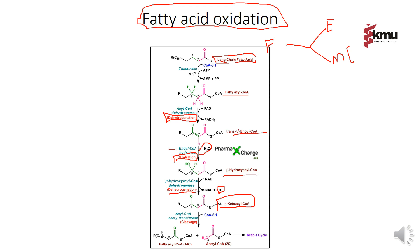In the fifth step, coenzyme A and thiolysis take place. The enzyme acyl-CoA acyl transferase is used, and beta-keto acyl-CoA is split into two groups: one is acyl-CoA consisting of 14 carbons, and the other is acetyl-CoA consisting of 2 carbons. This reaction is called cleavage, because beta-keto acyl-CoA is divided into two molecules.